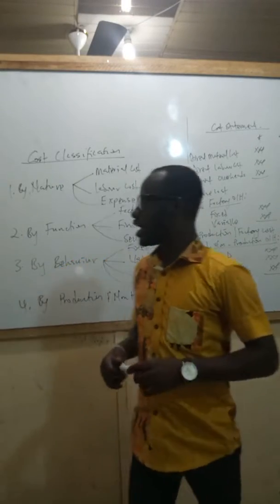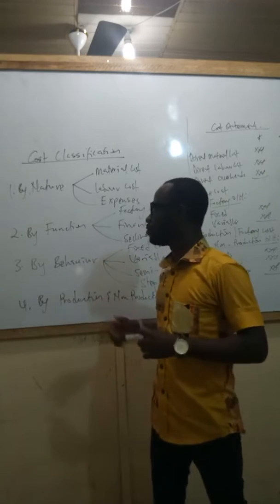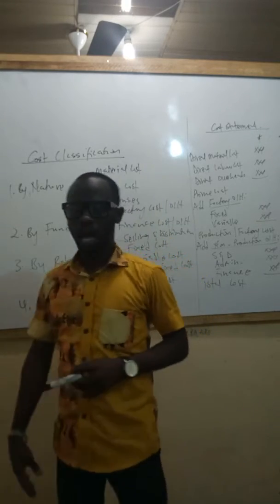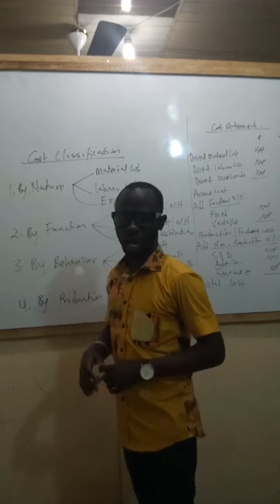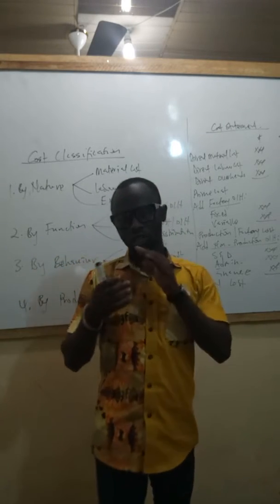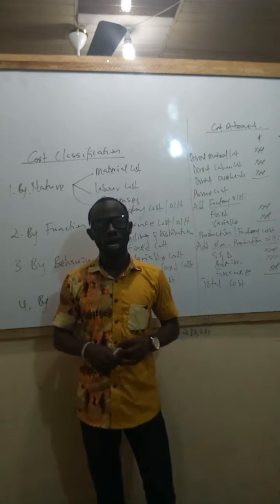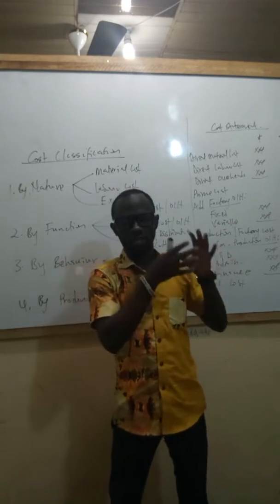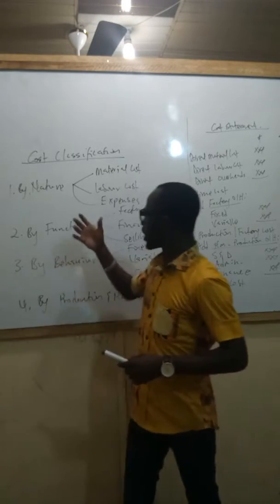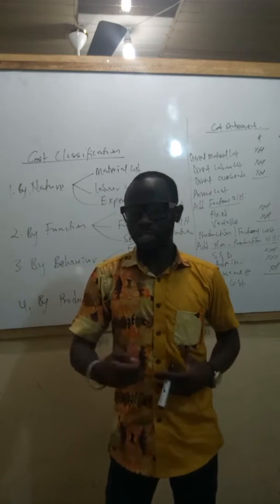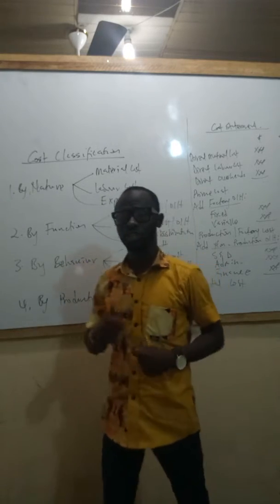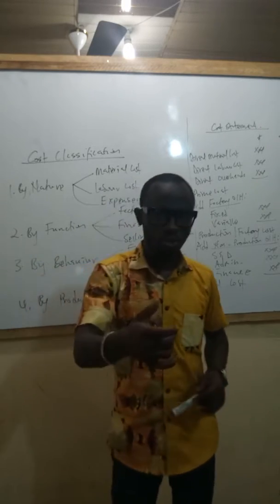Let's look at our next term for classification - the next basis of classification in the series of classification of cost. We have looked at classification of cost according to nature, where cost is classified according to the element of cost: material cost, labor cost, and overheads. We also mentioned the difference between direct cost and indirect cost. Then we came to classification of cost according to function, where we classify cost according to the various departments and activities undertaken within an organization.